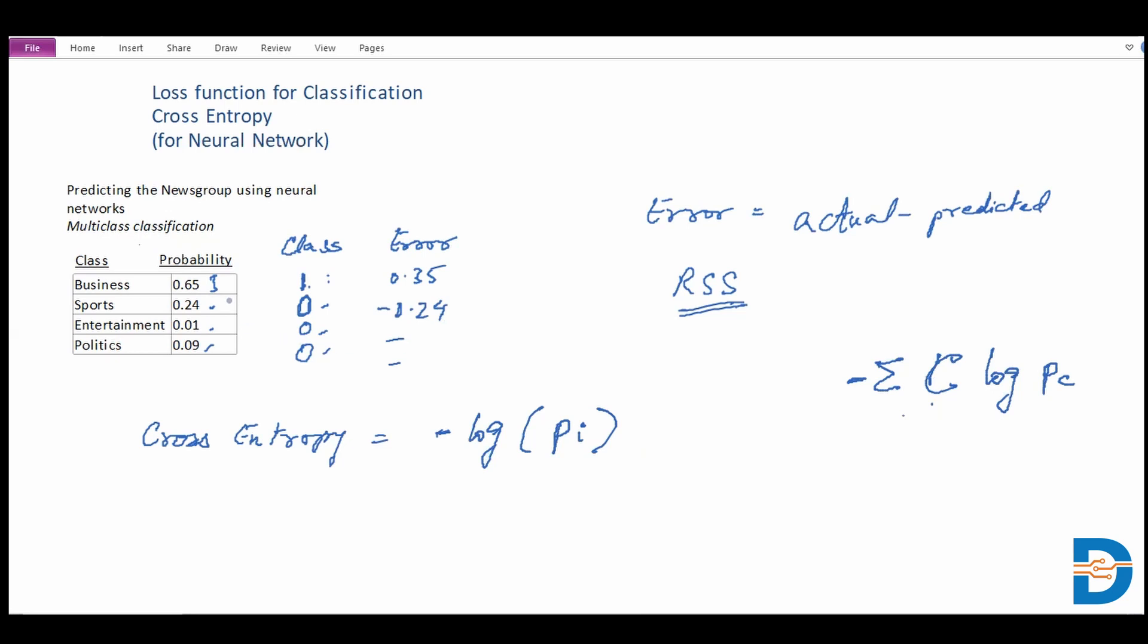So if we really take a look at expanding this term, we are talking about three of the classes which have terms that include the class as zero. The class value would be zero, so those terms cancel out, and we only have the business class with the probability of 0.65. So minus log of 0.65, this comes to around 0.43.